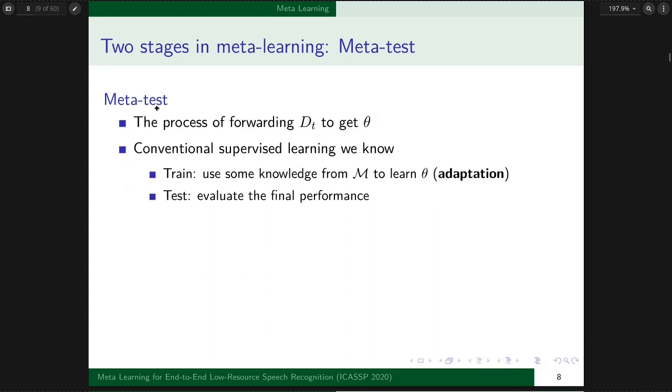In Metatest, we input the unseen dataset Dt to get parameters theta. It's like Supervised Learning, but during the Train stage in Metatest, we use knowledge from the Metamodel to learn theta. I call this process adaptation. After adaptation, we use the adapted parameters theta to evaluate final performance.